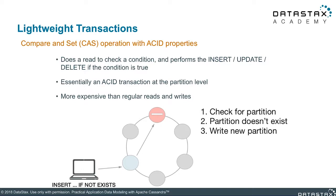In the diagram here, we are showing a lightweight transaction for an insert operation, which is identified with the keywords IF NOT EXISTS at the end of the statement. When executing the request, it goes to a coordinator node and then is routed to the corresponding replica node. The replica will then check if there is already an existing partition with the same primary key. If there is an existing partition, the replica node will respond saying that the partition exists without attempting the write. However, if there is no partition, the replica will go ahead and write that partition.